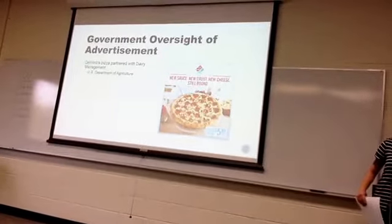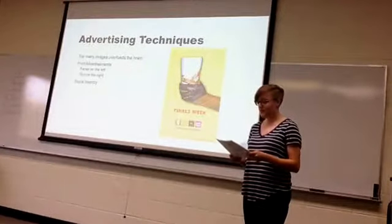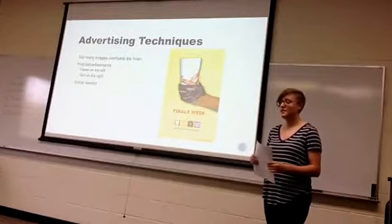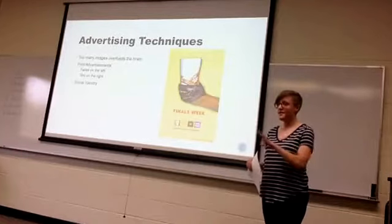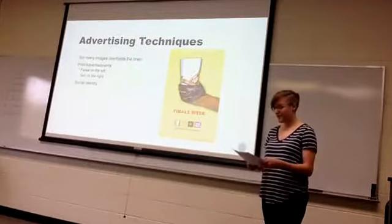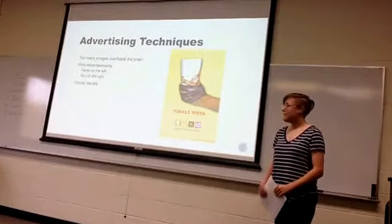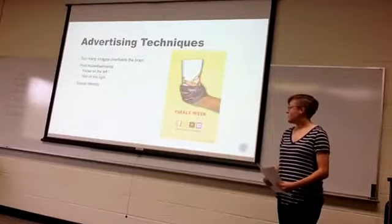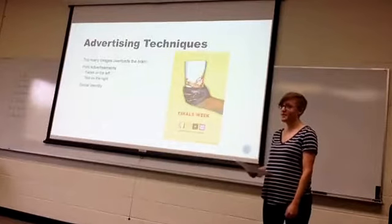Next, the psychology behind advertising. According to the American Psychological Association in a 2002 article, the brain processes information in chunks, so too many images in an advertisement will overload the brain. In print advertisements, faces should be on the left and text on the right to help lateralize it in your brain. According to Dr. William Klein in Psychology Today in 2014, social identity is a big tactic — targeting your group in society. For example, this Dunkin' Donuts ad about finals week makes college students feel they need coffee to survive finals.